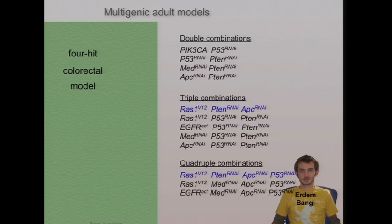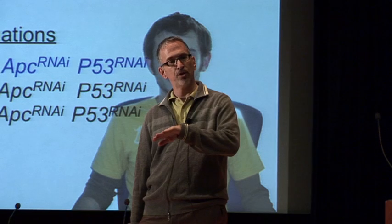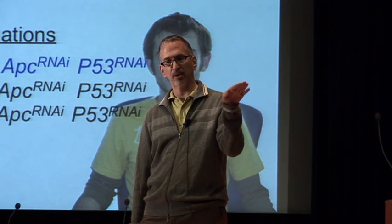We worked with the Vogelstein group. To date, the most common quadruple combination of mutations you see in patients is RAS, P10, APC, P53. Erdem built all of these combinations, targeted the transgenes to the gut using conditional activation, turned it on only in the adult. In addition to the quadruples, he built all the subset triples, all the subset doubles, all the singles — that's 15 fly lines for each quadruple. For those wondering why we stopped at four: there are no two currently sequenced tumors that share five genes. The statistics fall off sharply.